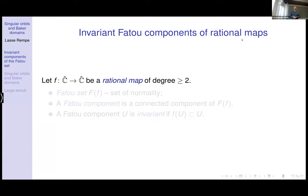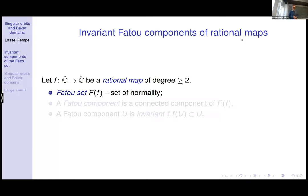Let's first consider the case of a rational map — iterating a rational map on the Riemann sphere. The Fatou set is the set of normality of the iterates: the set of points where the iterates of f form a normal family on some neighborhood of that point. We can think of it as a set of stability — equicontinuity with respect to the spherical metric.